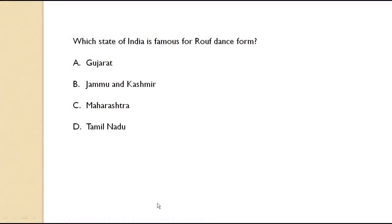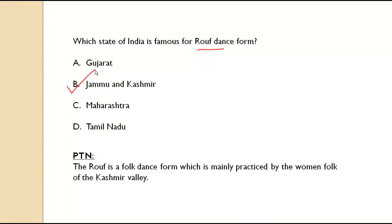Which state of India is famous for the Rauf dance form? It is Jammu and Kashmir. The Rauf is a folk dance form mainly practiced by women folk of the Kashmir valley. So remember it is mainly performed by females.